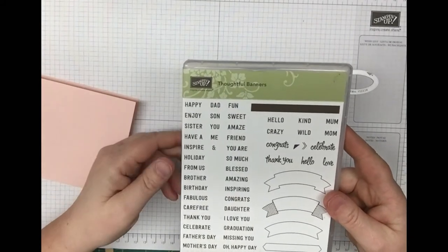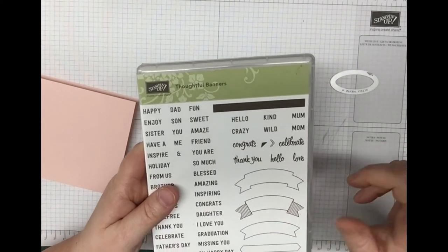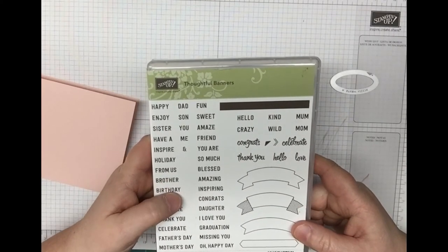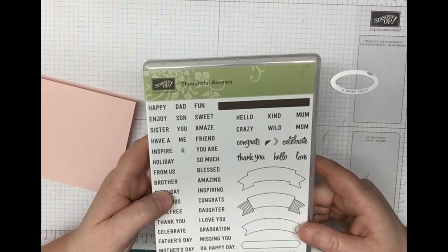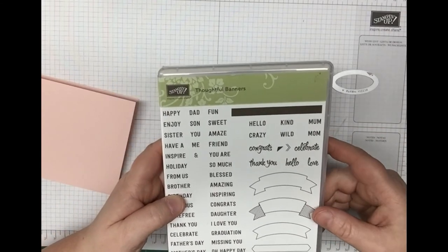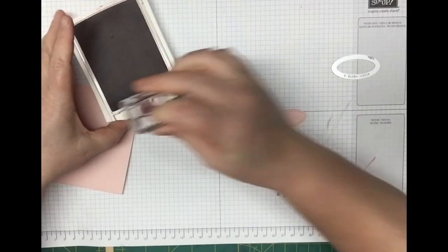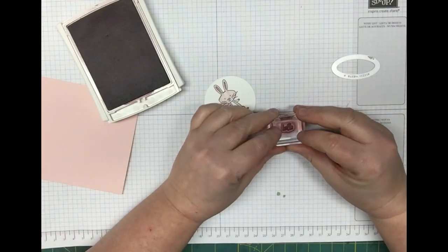I'm going to use the Thoughtful Banners stamp set. I want to stamp out this little hello on here. I'm going to use sweet sugarplum. You could use whatever you want. If you want to use Happy Easter, you could do that also. I just thought it was cute with the little bunny—it looks like he's waving hello. I'm just going to stamp this right in the center here.